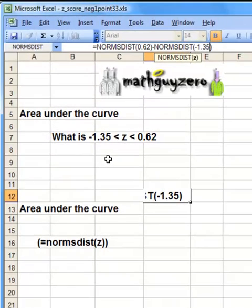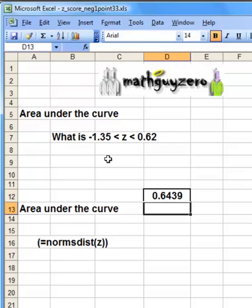So what it's doing is it's taking the larger area and it's going to subtract out the smaller area. Go ahead and hit enter. That's your answer, 0.6439. That's the area between those two Z scores.